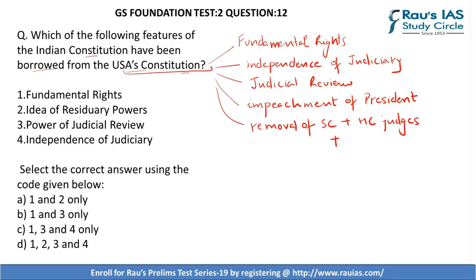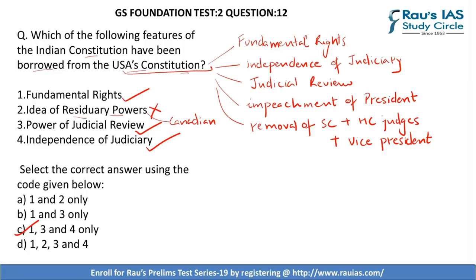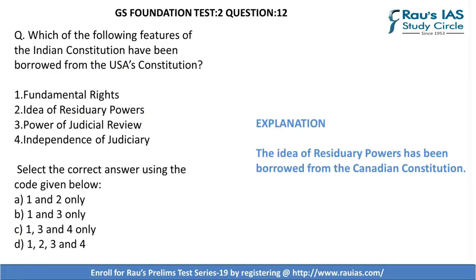The first — fundamental rights — is correct. Second — idea of residuary power — is wrong; the concept of residuary power has been borrowed from the Canadian Constitution. Third — power of judicial review — is correct. Fourth — independence of judiciary — is also correct. Hence, the right answer is C — 1, 3, and 4 only. Please have a look at the explanation.